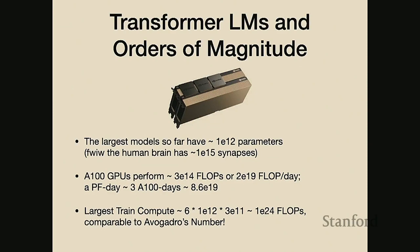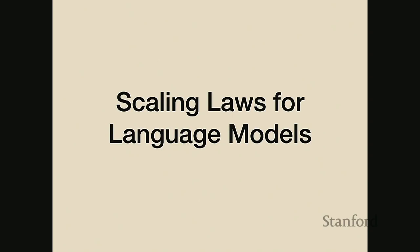I find these numbers mind-boggling. In chemistry, a macroscopic amount of stuff is an Avogadro's number of atoms - about 6×10^23. Somehow we're actually able to build computers that working together do more than an Avogadro's number of computations to train these neural models. With that prelude, I'll start talking about scaling laws for these kinds of language models.